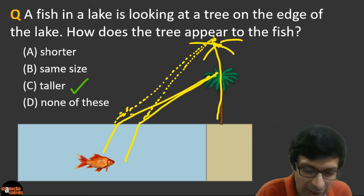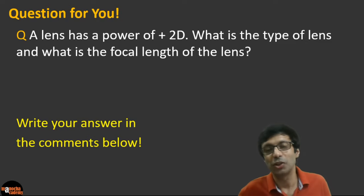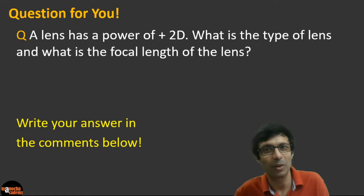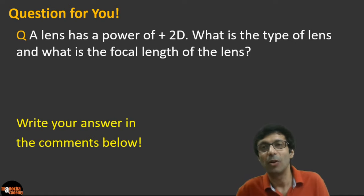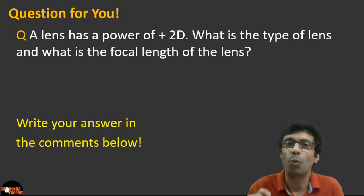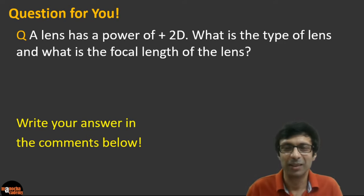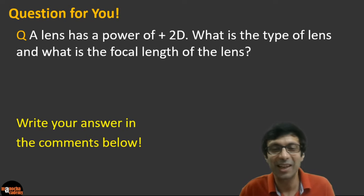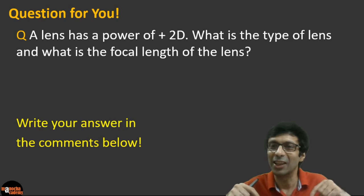Here's a homework question: A lens has a power of plus two diopters. What is the type of lens, and what is the focal length of the lens? Remember what we discussed about positive and negative signs for power of a lens. Use the focal length formula to calculate it, and write your answer in the comments below.